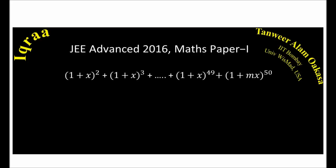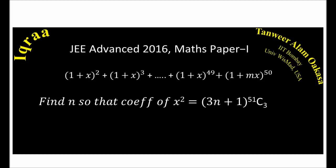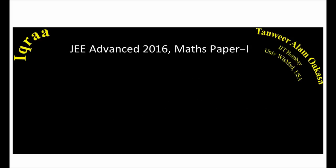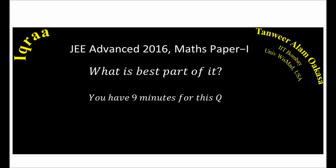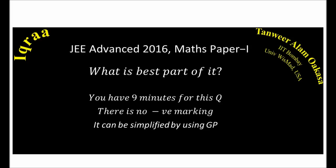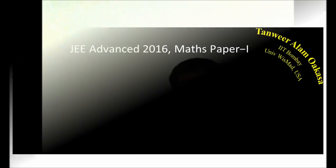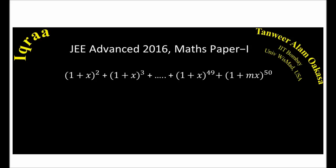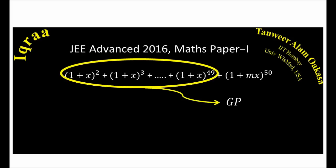Now let's go for the binomial theorem problem. The problem was: (1+x)² + (1+x)³ + ... up to (1+x)⁴⁹ + (1+mx)⁵⁰. We need to find n such that the coefficient of x² equals (3n+1)·51C3, for the smallest integer value of m. It looks like it has many calculations, but we have 9 minutes for this question and there is no negative marking. It can be simplified using the GP formula. Take a deep breath and get fully prepared to do it with full confidence. The first 48 terms form a GP with first term (1+x)² and common ratio (1+x).